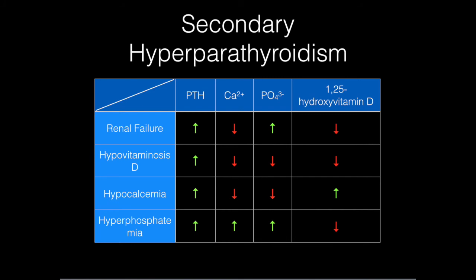Next we have isolated hypocalcemia. It's somewhat theoretical — I don't remember being tested on calcium alone at Step 1 — but it's a valid possibility. Maybe it's a drug side effect from a loop diuretic, Foscarnet, or Amphotericin. Low calcium will cause the body to increase PTH and 1-alpha-hydroxylase levels. So PTH will be increased, 1,25-hydroxyvitamin D will be increased, and because of high PTH, phosphate will be wasted.